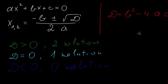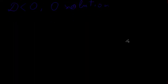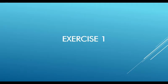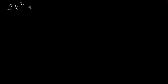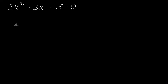Let's move to our first example. Let's say we have 2x² plus 3x minus 5, and it is equal to zero. What we first need to do is calculate our discriminant, because if it's negative there won't be any solutions and we don't have to solve it anymore.